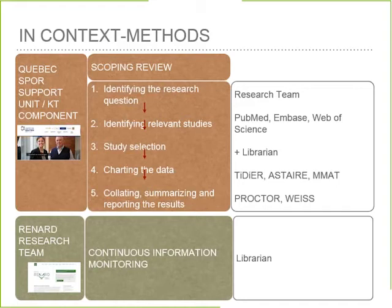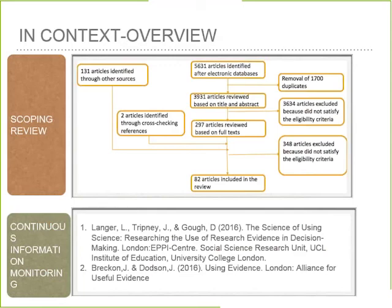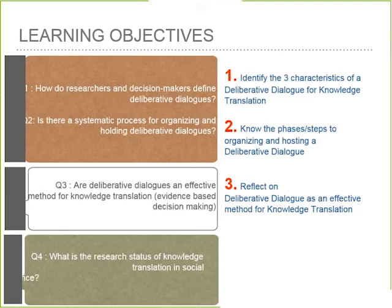The RENA research team also carried on a continuous information monitoring system. These two works together led to the identification of 82 articles. We started with 5,631 articles and narrowed it down through a very systematic and rigorous process to 82 articles, and added two more: the first a systematic review, and the second a scoping review on the status of knowledge translation research in social science. I invite you to consult the references if you want more information.